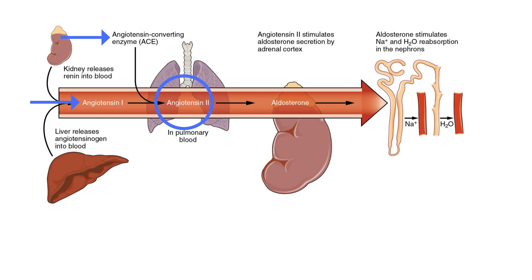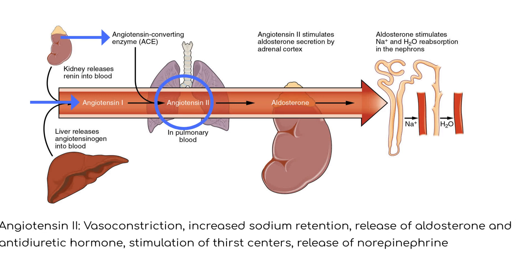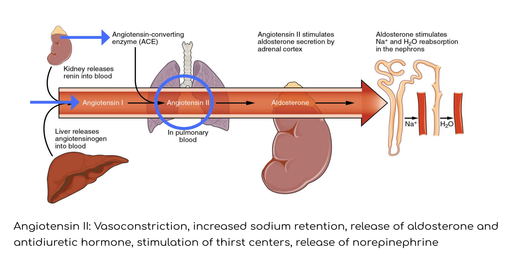Angiotensin II has a variety of actions, which include vasoconstriction, increased sodium retention by the kidneys, release of aldosterone by the adrenal cortex, release of antidiuretic hormone by the posterior pituitary gland, stimulation of thirst centers in the hypothalamus, and increased release of sympathetic neurotransmitters such as norepinephrine.